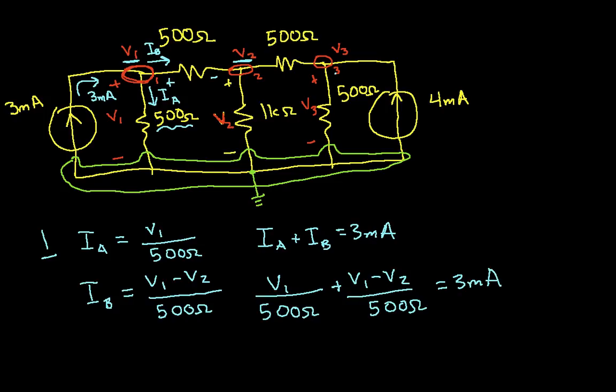I could leave it at this, but in order to do step 4, which is going to be solving the system of equations, I really want to simplify it one step further by combining all the terms that include V1 and making them one term, then combining terms that include V2. So in this case, I'll have V1 times 1 over 500 ohms plus 1 over 500 ohms, and this equals 3 milliamps. So this gives me one of my equations with my unknowns.